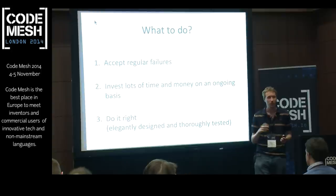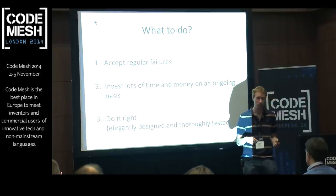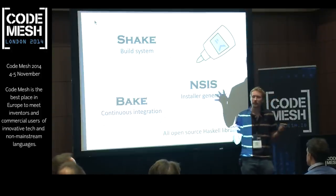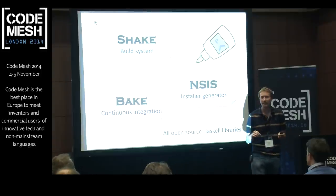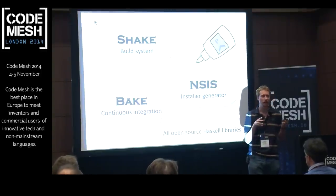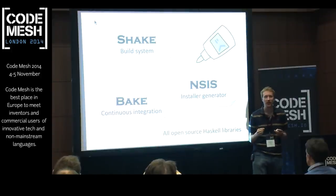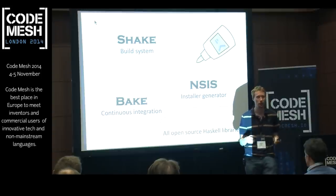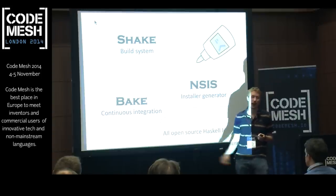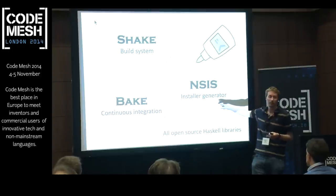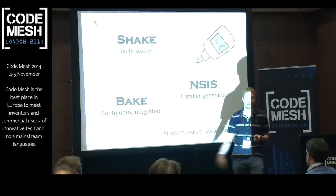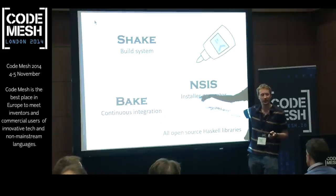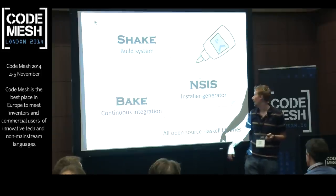For the last five years I've been working on projects to improve the infrastructure, and out of that we've spun three open source libraries. This talk I'm going to sell these three things, as well as the idea of using Haskell — or some other real language — for your glue code. The three things I'm going to talk about are Shake, a build system; NSIS, something for generating Windows installers; and Bank, a continuous integration system.